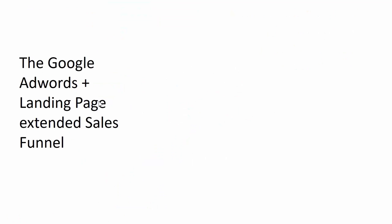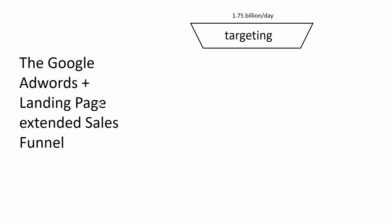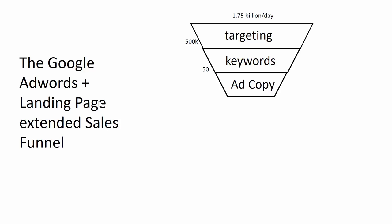Now let's look at the extended sales funnel generated by doing so. We have about 1.75 billion Google searches per day, and by choosing the right targeting we can boil these down to about 500,000 searches. This applies for users aged 35 to 50 who live in Singapore. By choosing the right keywords for Google AdWords, we can boil those 500,000 searches down to about 50 searches relevant to our product or service. By choosing the right contents on our landing page — the ad copy, the writing, and the graphics — we can boil the 50 users down to about 10 for whom our offer is interesting.